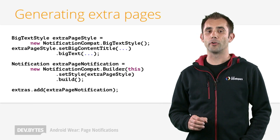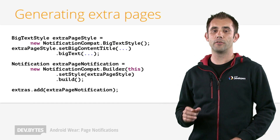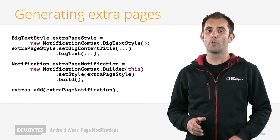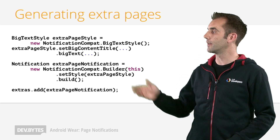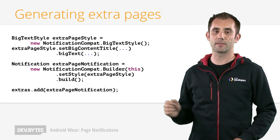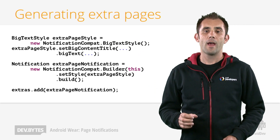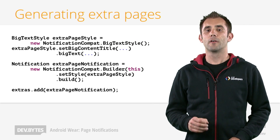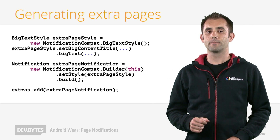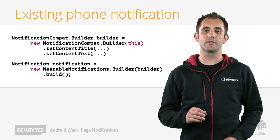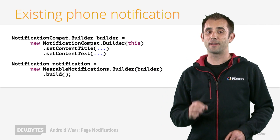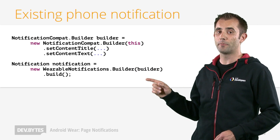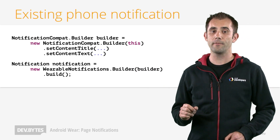You would now modify your loop to generate a new notification for each overdue item, with whatever text you want inside of it, like this code here. And you should add each of these into your array list for use later on. So adding the extra pages to your code is now really, really easy. This is what your existing code might look like right now.